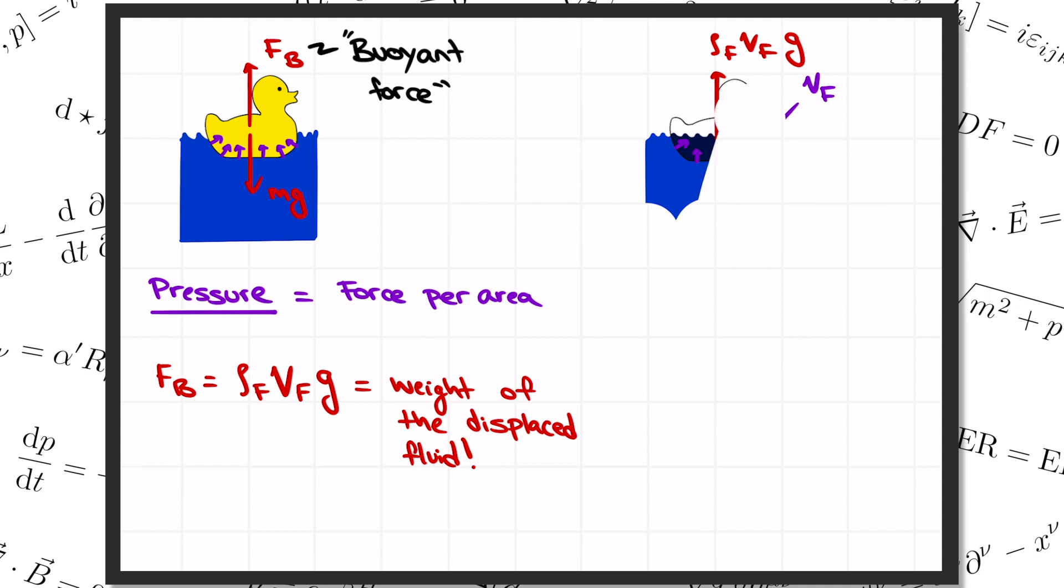Now say we just rest the object on the surface of the fluid and it floats. So we're not trying to force it under or anything like that. Then, as we knew from the beginning, by demanding that the buoyant force upward cancels out the total weight of the object downward, we know that the buoyant force has got to equal the weight of the object, Mg.